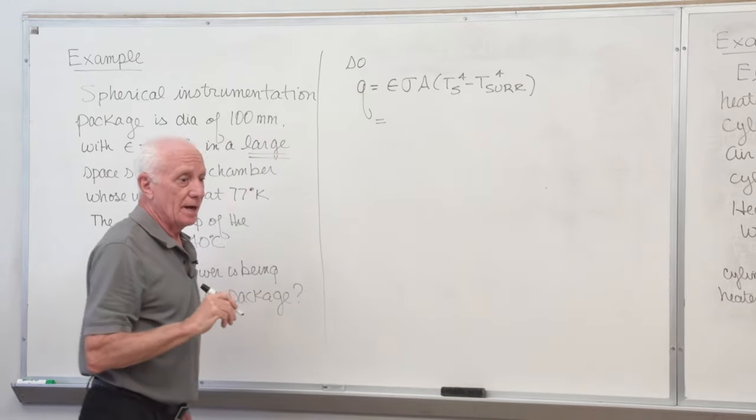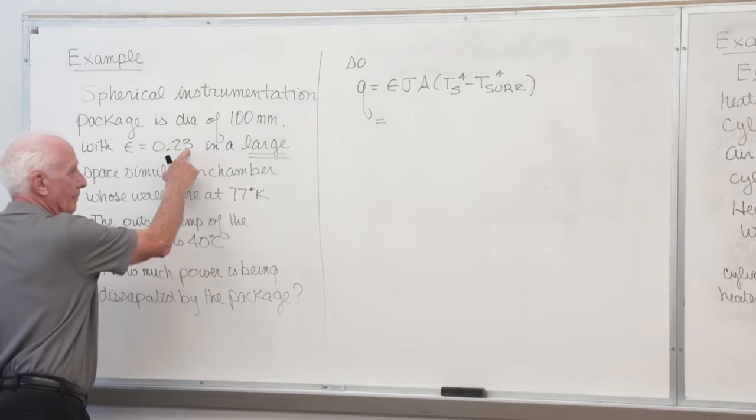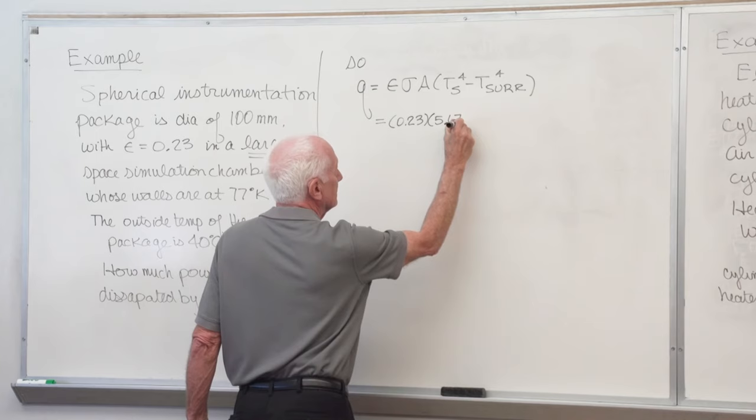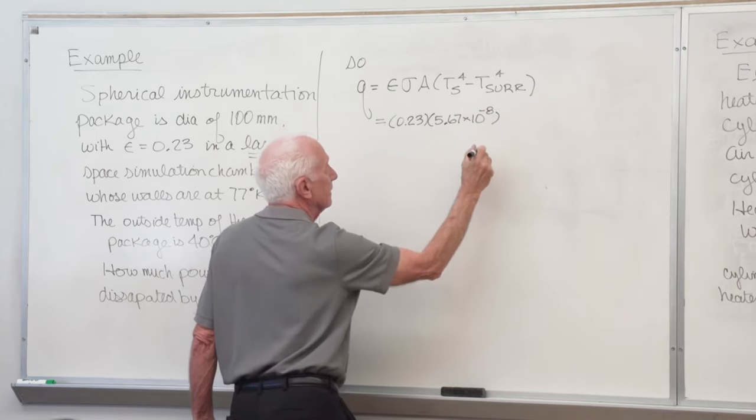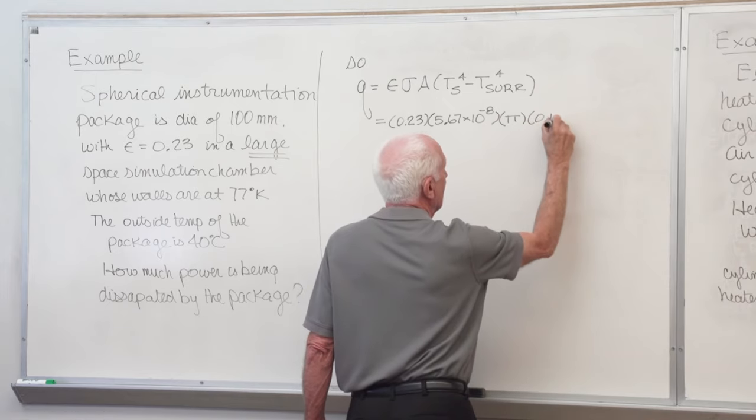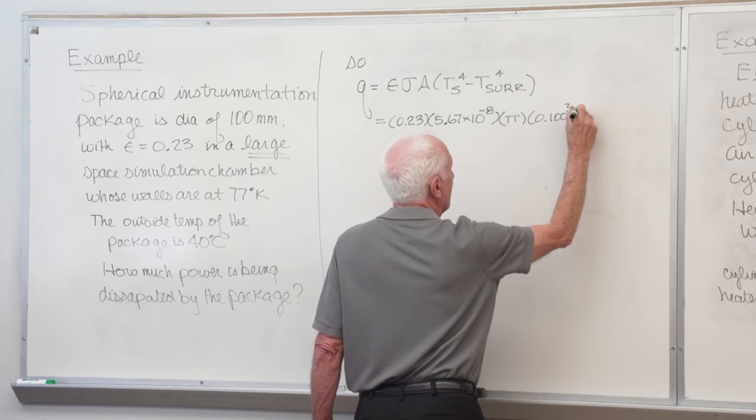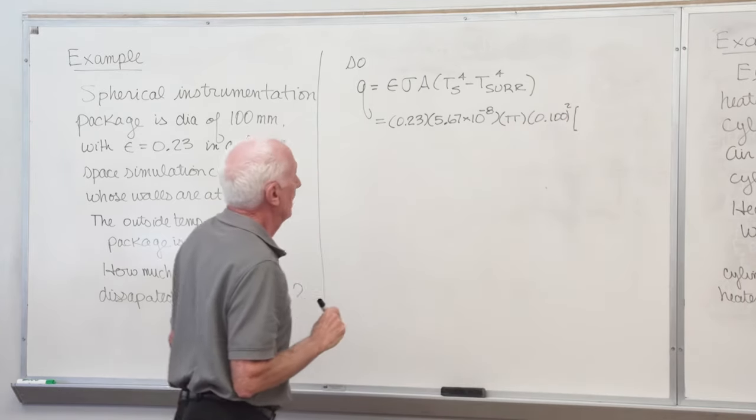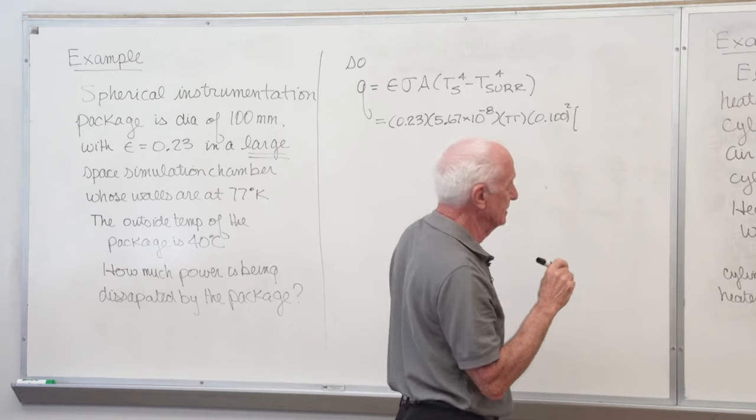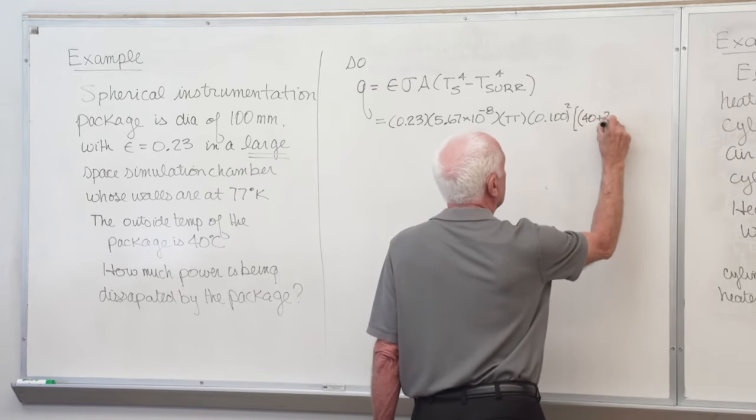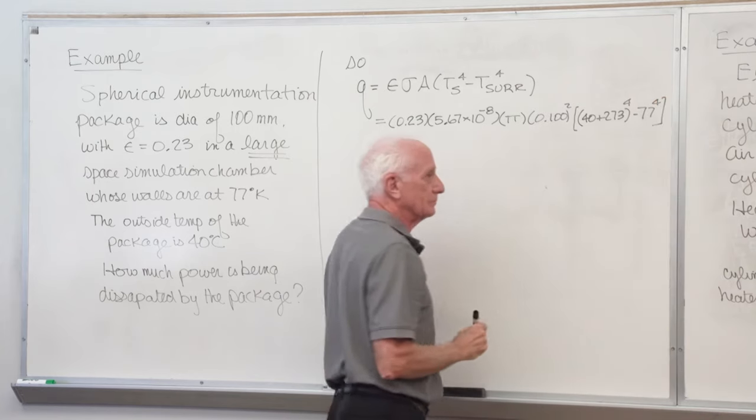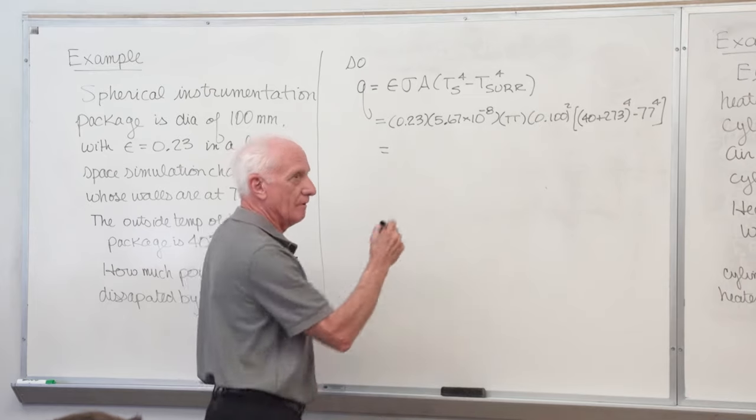Q is equal to epsilon sigma A T S to the fourth minus T surroundings to the fourth. Epsilon is epsilon of the small object, 0.23. Sigma is the constant, 5.67 times 10 to the minus eighth. Area of a sphere, surface area, pi D squared multiplied by surface temperature. You better be careful. It's not degree C. Everything in radiation has to be degrees K. 40 plus 273 to the fourth minus 77 to the fourth. Power dissipated, 4.3 watts.